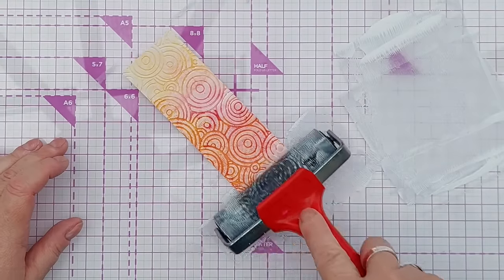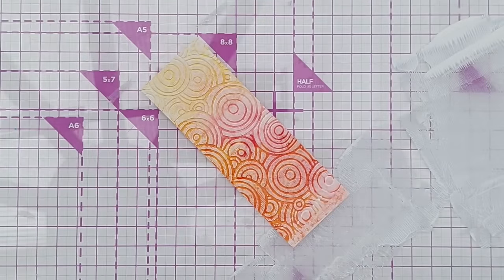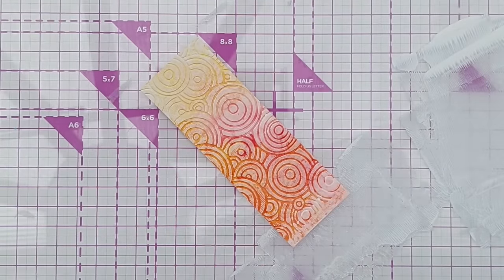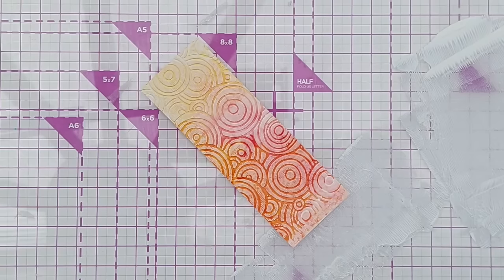When you brayer on paint in this way the paint will only go on the raised areas of your embossed paper. The debossed areas will remain the bold colour. So you get toning down of most of the bold colours but some of the boldness can still peek through.